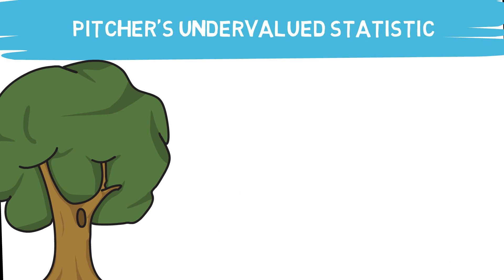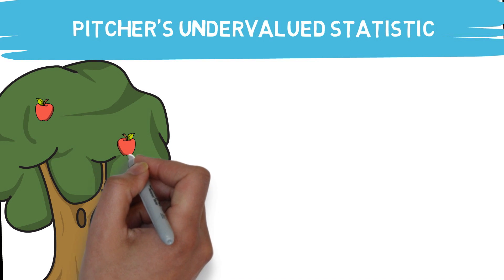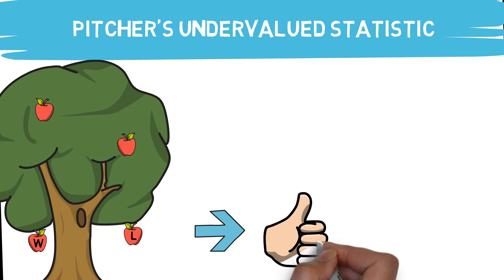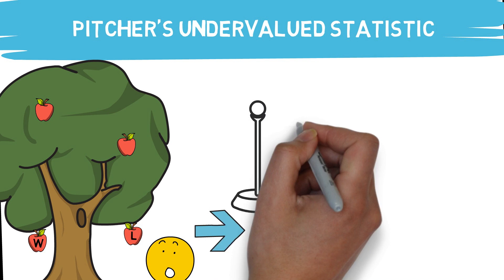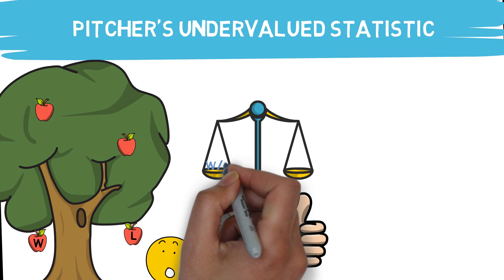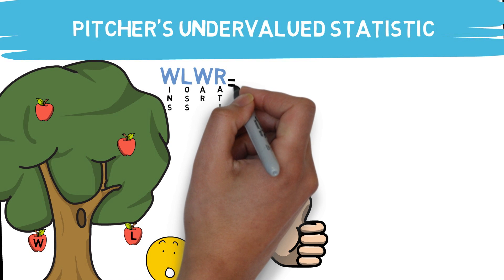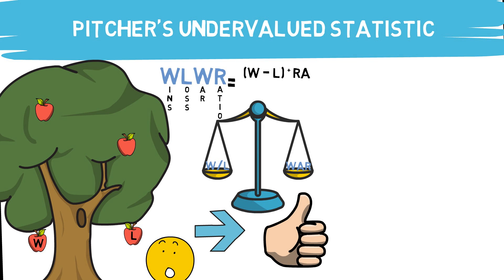Now let's move on to our next statistic regarding pitchers' production. This undervalued pitching stat is more of a fun one. I mentioned in my video on FIP that talking about wins and losses in the sabermetric community is somewhat of a low-hanging fruit — but what if those numbers could be transformed into something useful? This stat takes a pitcher's record and puts it on the same scale as WAR. It's called WLWR, which stands for Win-Loss to WAR Ratio. It's calculated by taking the pitcher's wins less their losses, adding their total runs allowed, dividing by total games played, multiplying by the WLWR constant of 3.1, and finally multiplying all of that by 10.